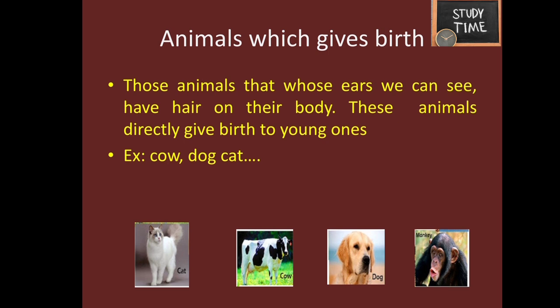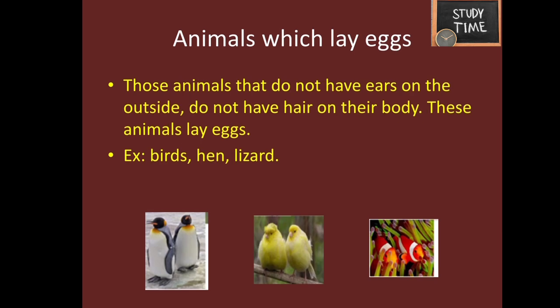Next, we are going to see the animals which give birth and the animals which lay eggs. Those animals whose ears we can see have hair on their body — these animals directly give birth to young ones. Examples are: cow, dog, cat, and monkey.